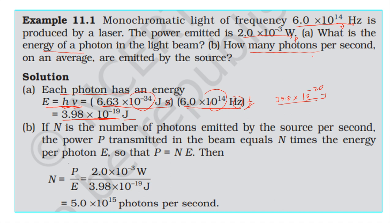Part two: how many photons per second on average are emitted by the source? Power is equal to energy divided by time.